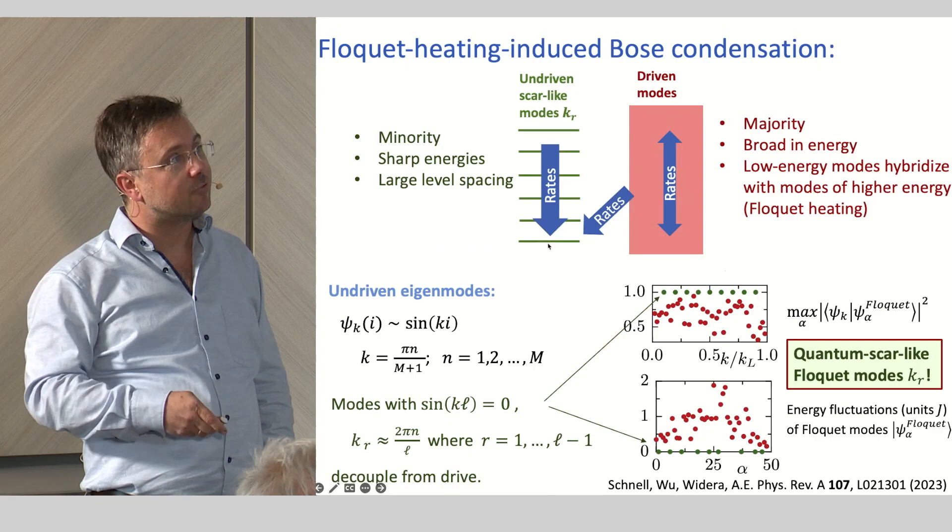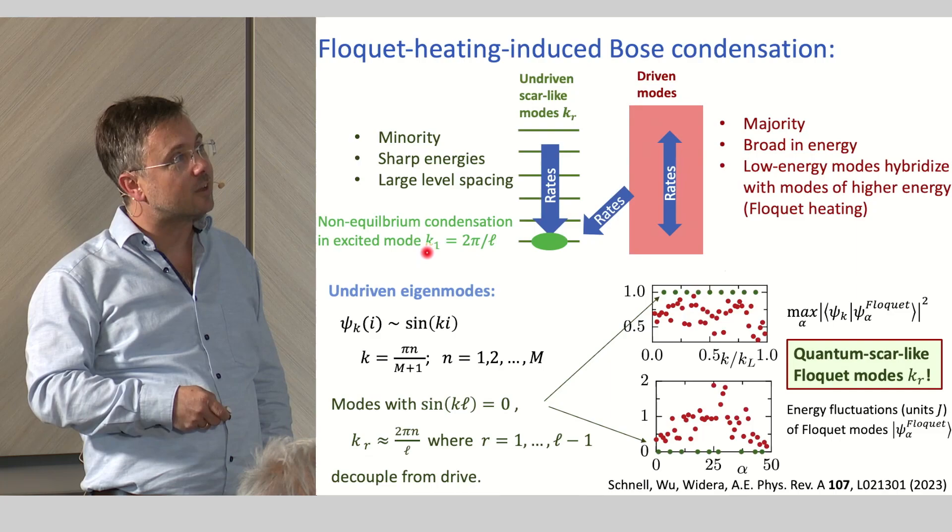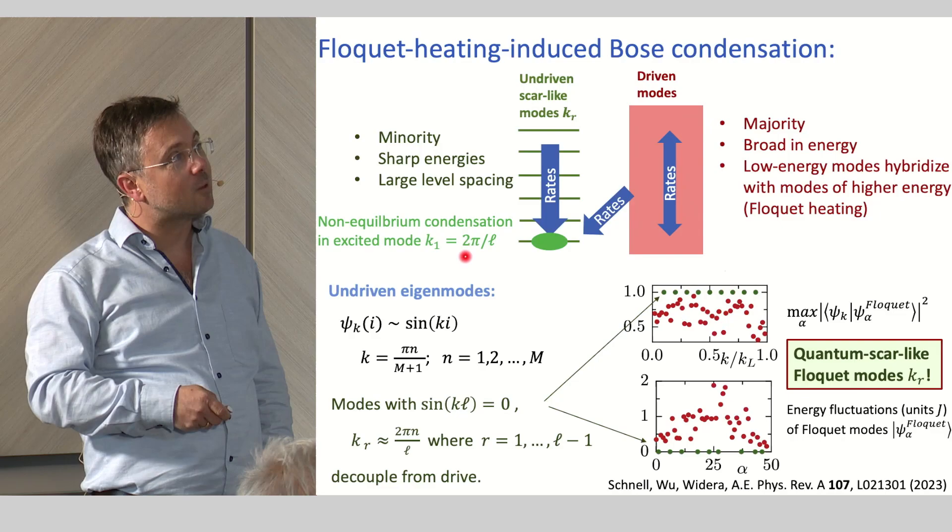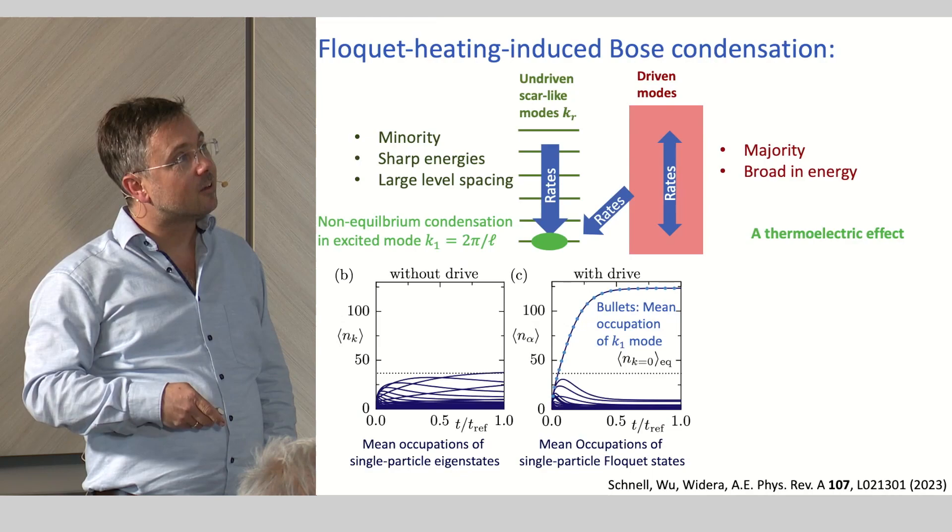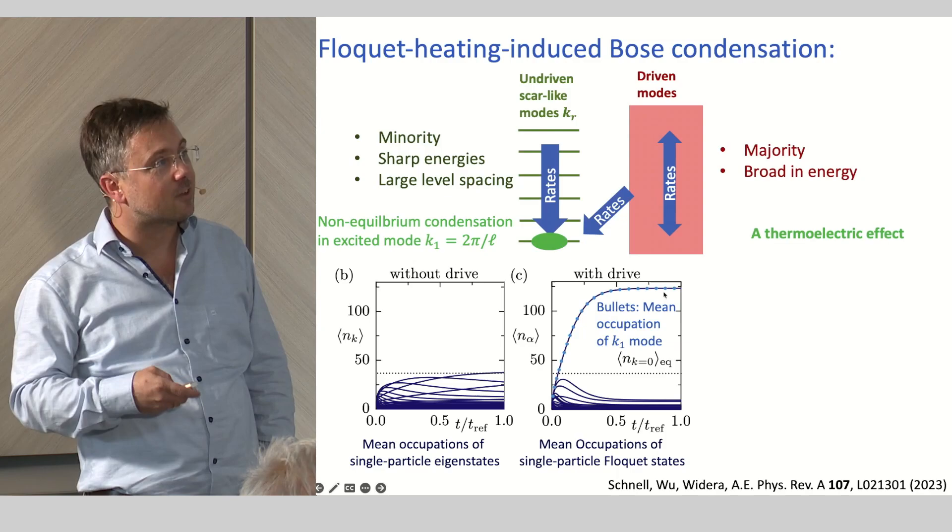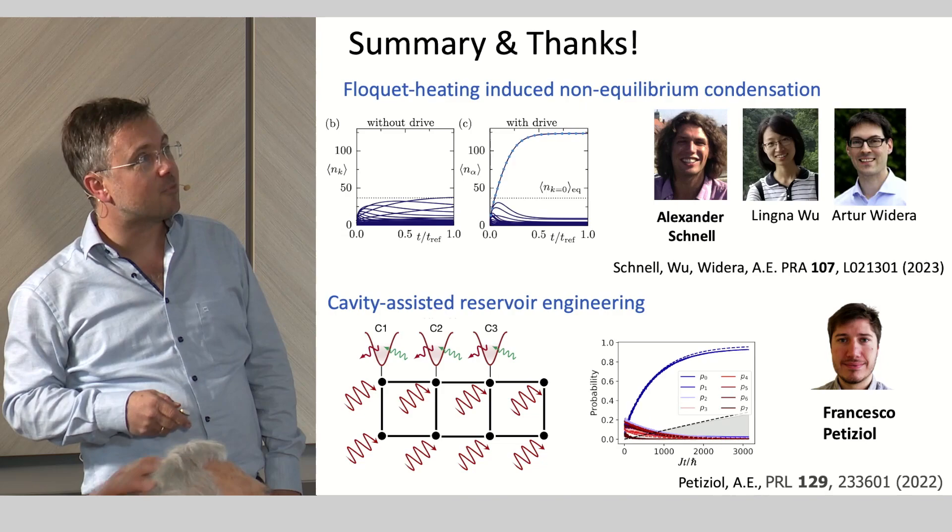And all this then explains this quasi or this non-equilibrium condensate in one mode which is the lowest energy mode of the undriven modes which has the quasi-momentum 2 pi over L or the wave number 2 pi over L. This is exactly this mode. The dots are the overlap with these modes. And this explains this type of non-equilibrium condensation. And this brings me already to my summary.